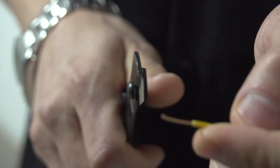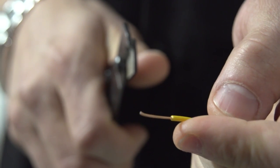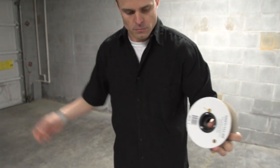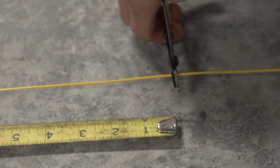Avoid stripping more than 3 eighths of an inch of insulation to prevent the wires from shorting each other out at the transmitter connection. A wire at least 15 feet will make the loop large enough for easier testing.